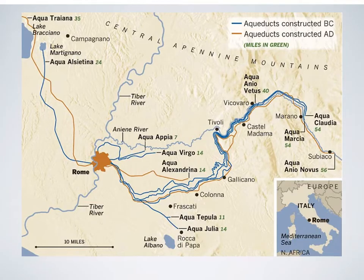This map illustrates the long distances they actually moved water from the outskirts into Rome. Some of these aqueducts are 56 miles long, such as the Aqua Anio Novus aqueduct, while others are much shorter. It was through the growth and spread of these aqueducts that Rome was ultimately able to become the city that it became.